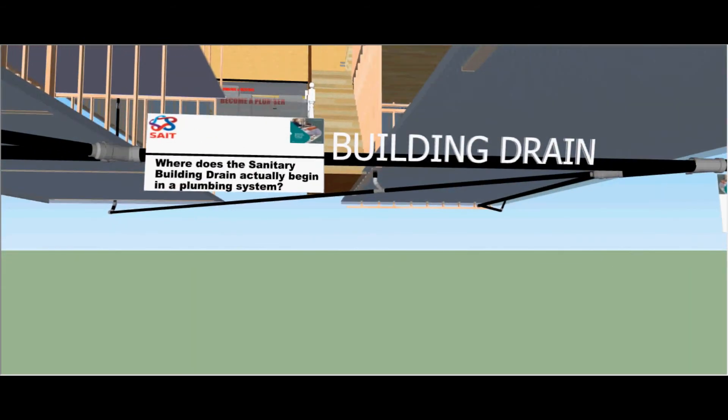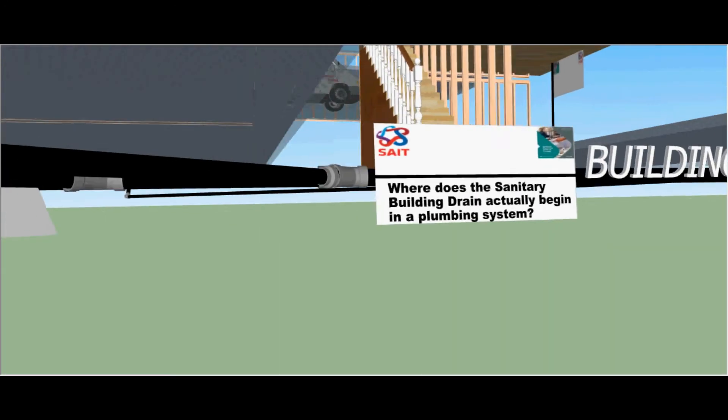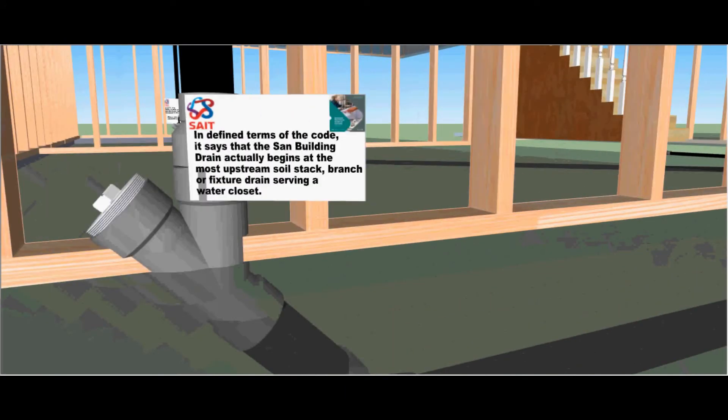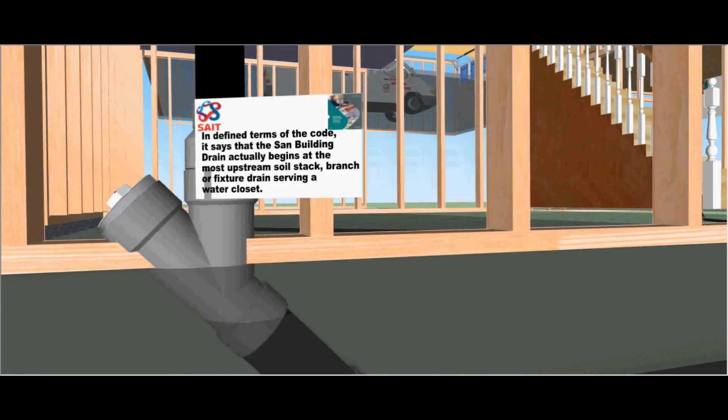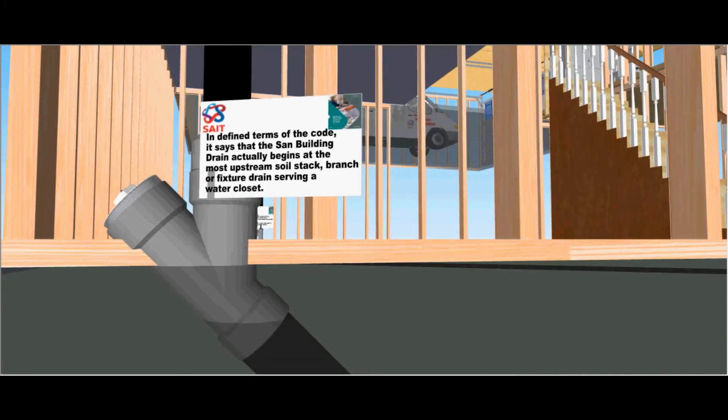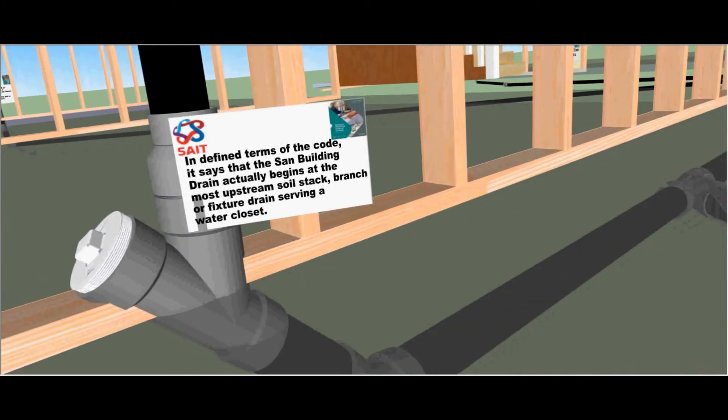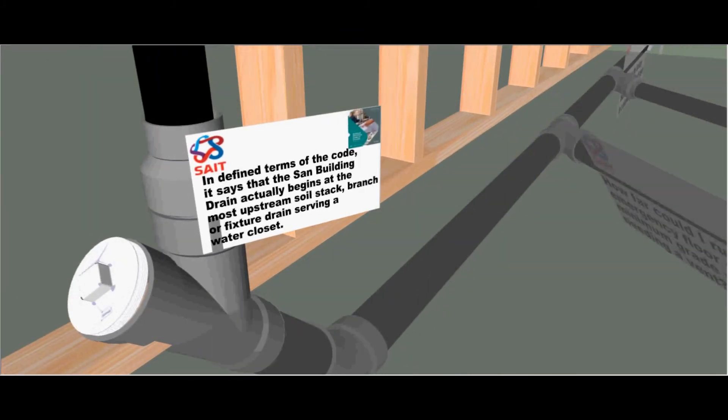Where does the sanitary building drain actually begin in a plumbing system? In defined terms of the code it says that the sanitary building drain actually begins at the most upstream soil stack branch or fixture drain serving a water closet.